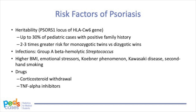Infection has also been recognized as a predisposing factor, especially with perianal and pharyngeal group A beta-hemolytic streptococcal infections. Additional triggers include increased body weight, emotional stressors, cutaneous trauma, Kawasaki disease, and second-hand smoking exposure. Other triggers include withdrawal of systemic corticosteroids, and paradoxically, tumor necrosis factor alpha inhibitors, which are also used to treat psoriasis. As we can see in Lucy's case, several risk factors were present, such as her family history of psoriasis, recent streptococcal infection, and obesity.